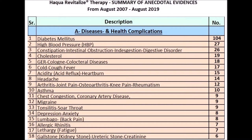1. Diabetes mellitus: 104 people. 2. High blood pressure: 27 people. 3. Constipation, intestinal obstruction, and digestive disorders: 26 people. 4. Cholesterol: 19 people. 5. Gastroesophageal reflux disease (GERD) and colateral diseases: 18 people.